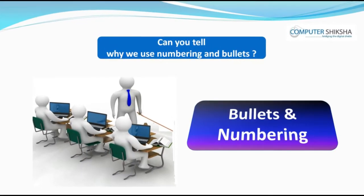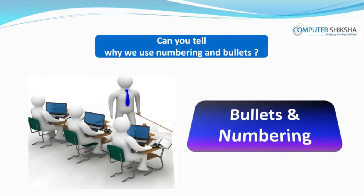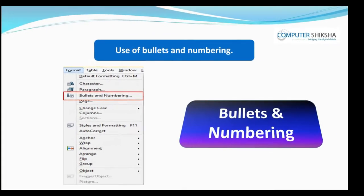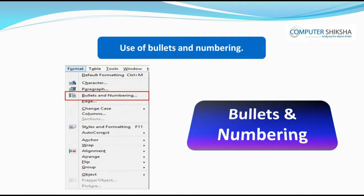Can you tell why we use numbering and bullets? If you want to prepare a list and you want to put different symbols in front of each of these lines, then you will use the bullets option. If however you wish to put numbering in front of each line, you will use the numbering option.